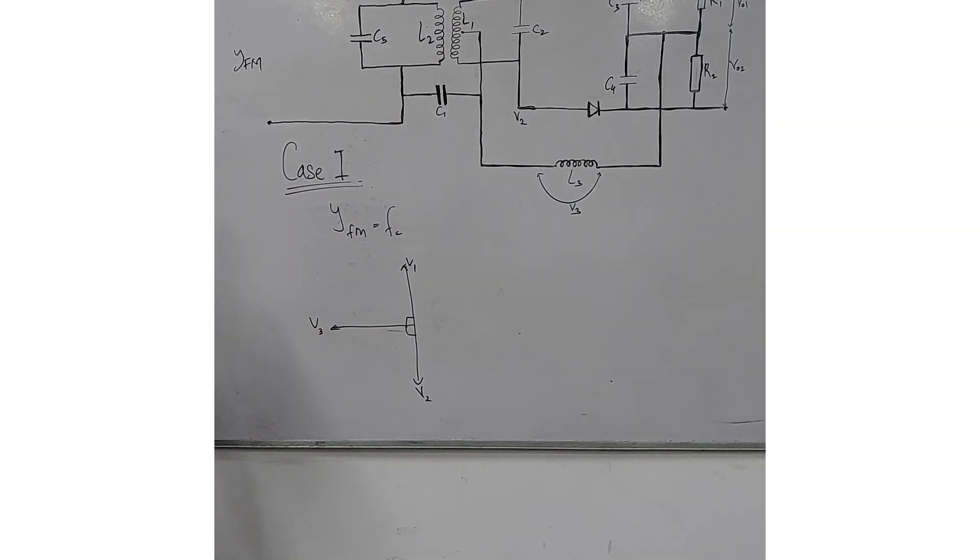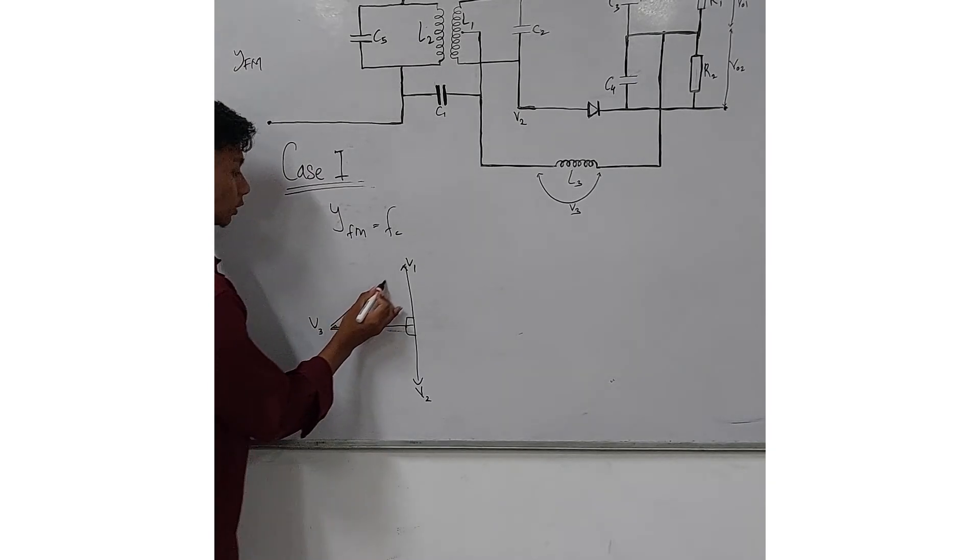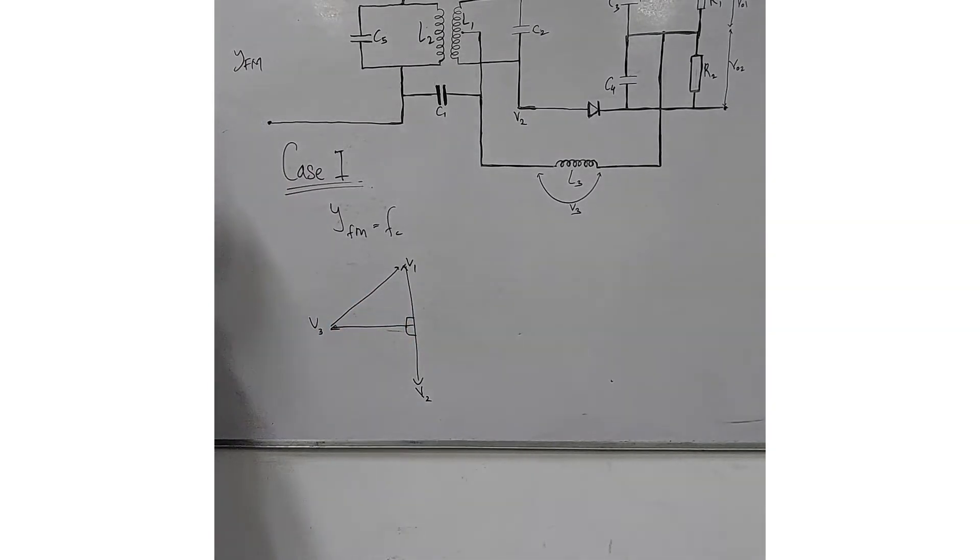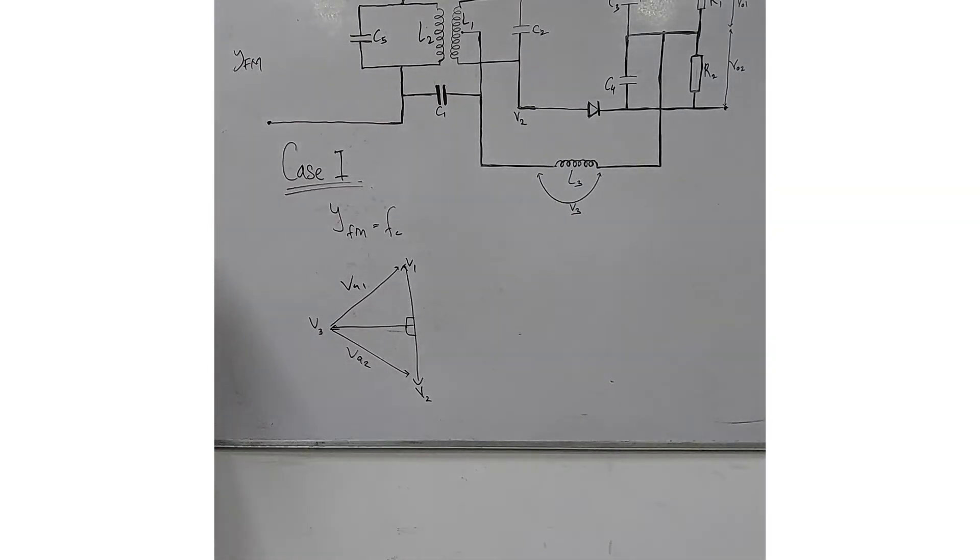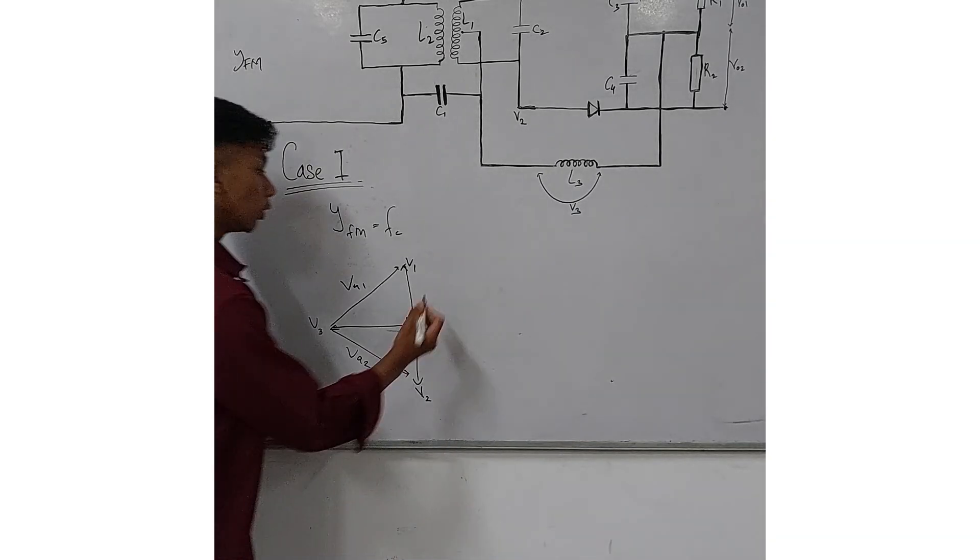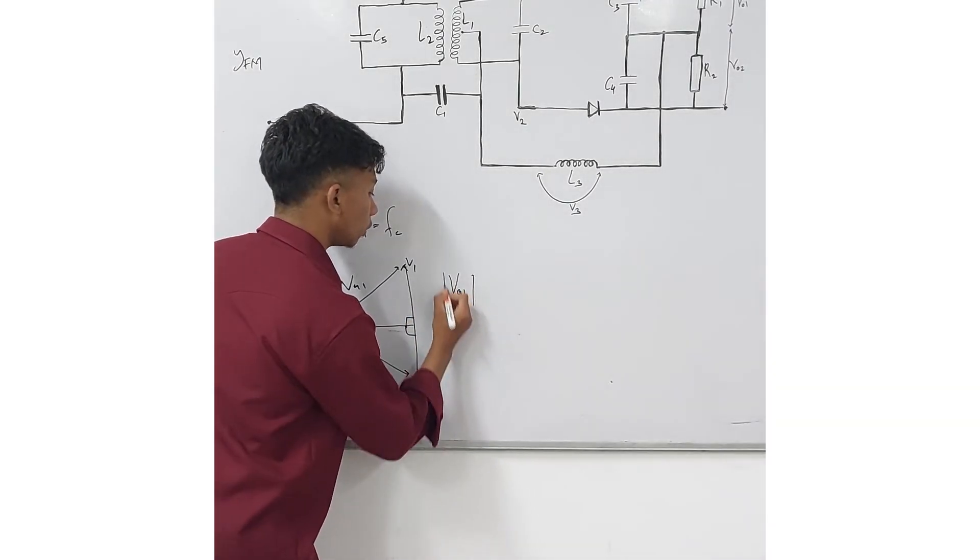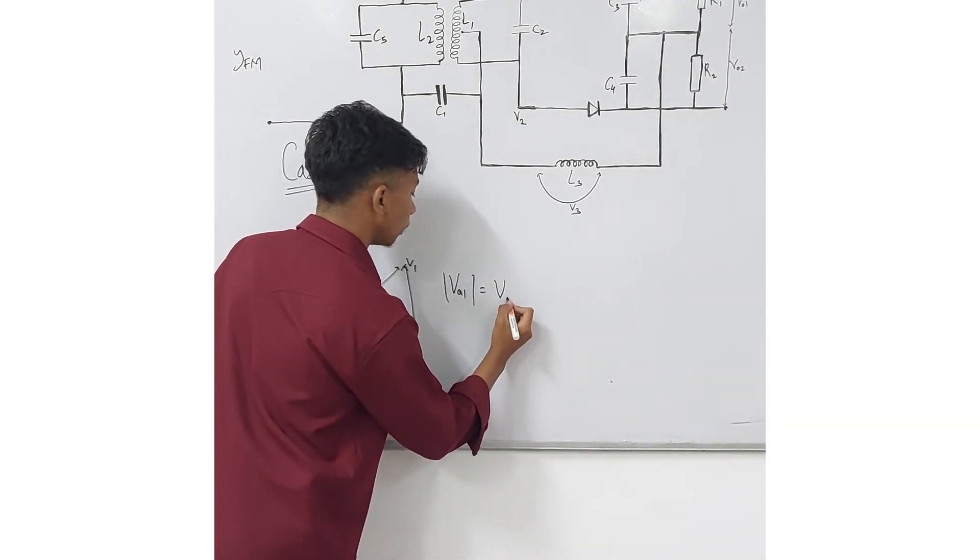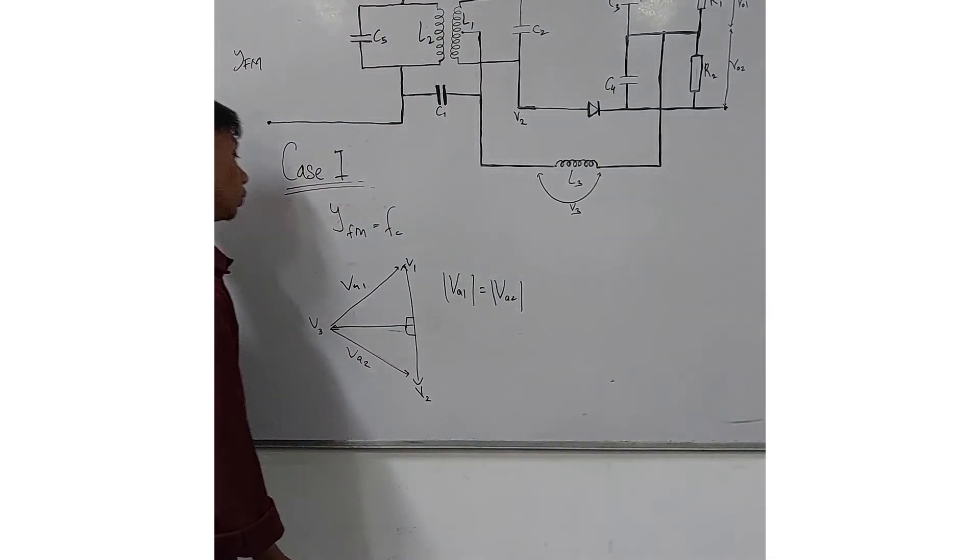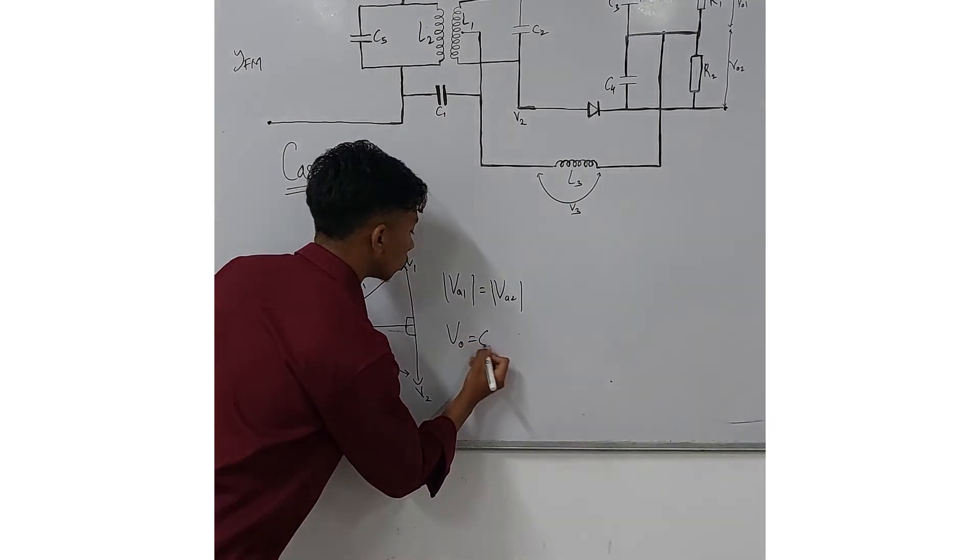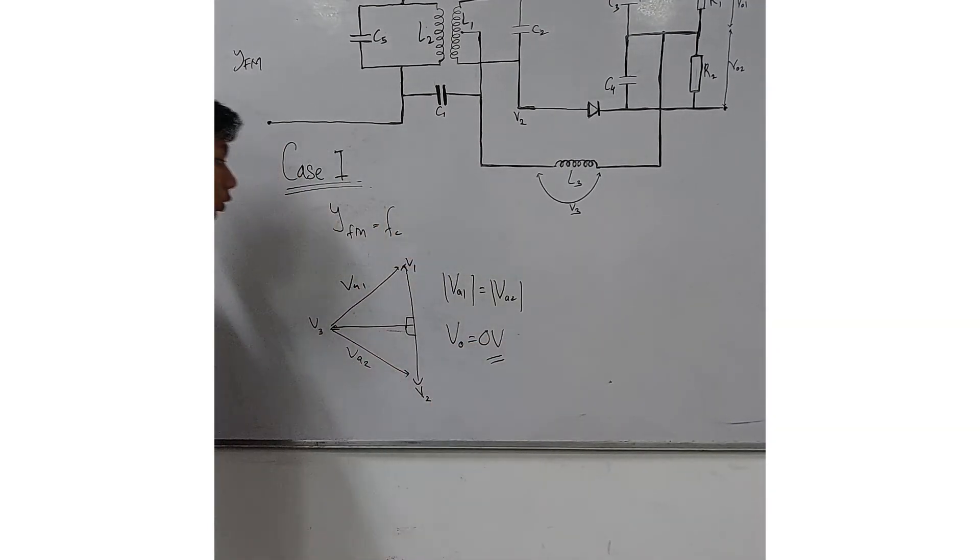Now trying to figure out the resultant V1, we can draw the resultant of Vc and V1 to obtain V1. Similarly, to obtain the voltage V2, we can draw the resultant between V3 and V2. Now we can see the length of V1 and V2 are equal, meaning the magnitude of V1 equals the magnitude of V2. Therefore, the output voltage V0 equals zero.